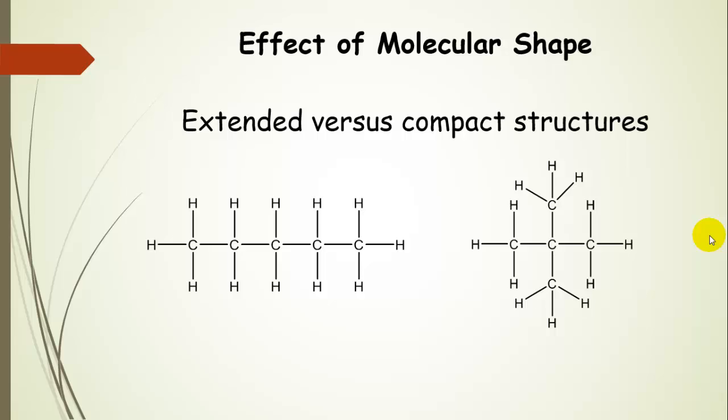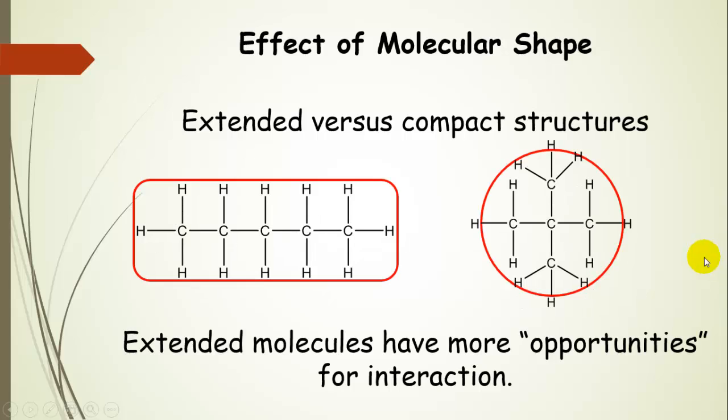Another aspect is molecular shape: extended versus compact structures. Here's these guys bonded in a line, this guy closer to a spherical shape. We can think of this as a box shape and this guy as more of a round shape.